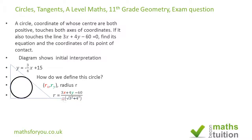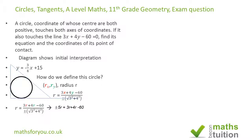The square root of the sum of the squares of the x and y coefficients gives √(9 + 16) = √25 = 5. We substitute r for both the x and y coordinates of the centre, giving ±5r = 3r + 4r − 60. Using the positive case with +5r: 5r = 7r − 60, so when we rearrange, 60 = 3r + 4r − 5r.